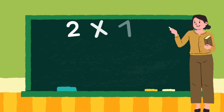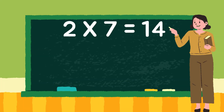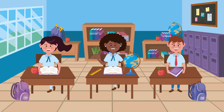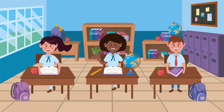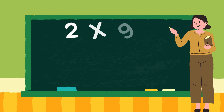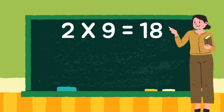2 sevens are 14. 2 eights are 16. 2 nines are 18.